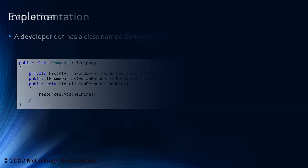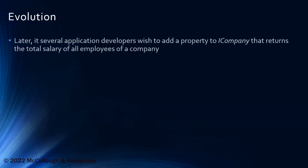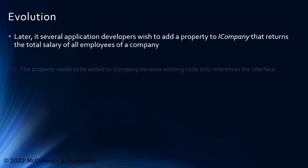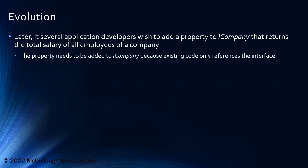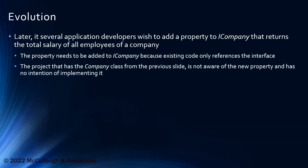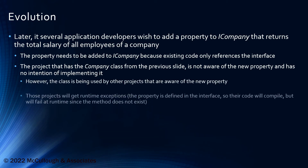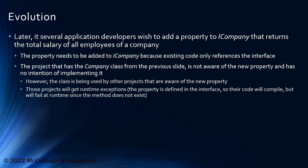At some point through the evolution, some applications using the iCompany interface would need to know the total salary of all employees of the company. We want to add a property to iCompany because existing applications are using that interface. But the project that defined the company class is not aware of this new property and doesn't need it. However, this class is being used by other projects that are aware of the new property and would like to access it. Those other projects would get runtime exceptions because the property defined in the interface allows their code to compile but fails at runtime since the method is not in the binary.